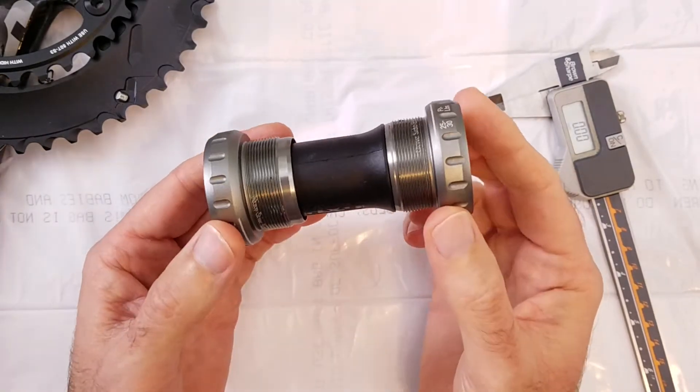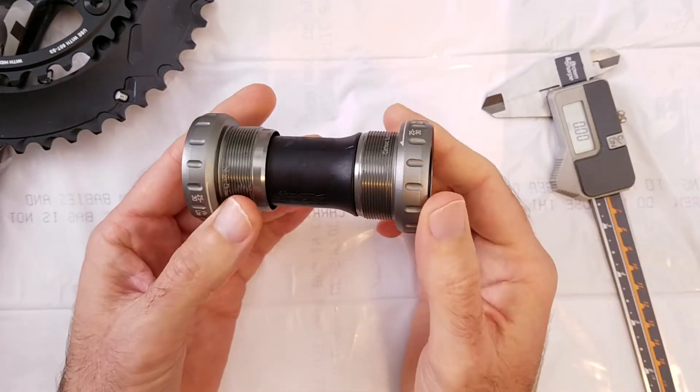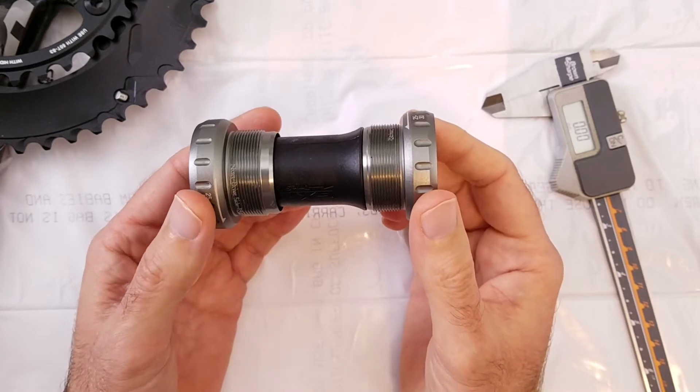The English in the model name refers to the fact that the cups here are threaded for the BSA standard versus Italian threading which uses a different thread standard.